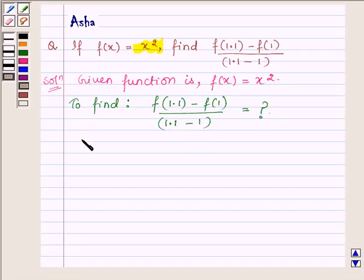So for that, first let us find out the value of the function when x is 1.1. Now since f(x) equals x square, therefore when x is replaced by 1.1 we have 1.1 whole square which equals 1.21. And the value of the function at x equals 1 is 1 square which is further equal to 1.